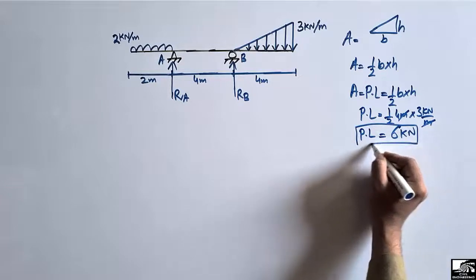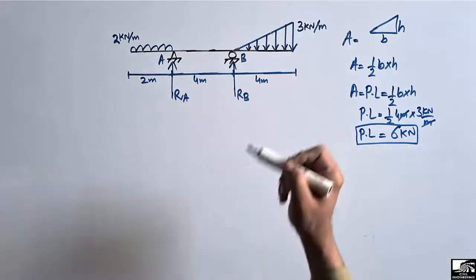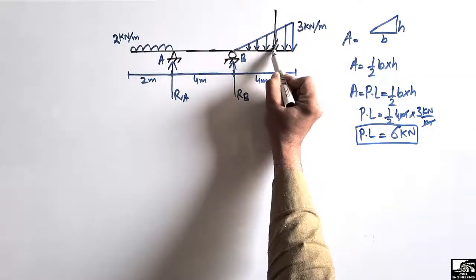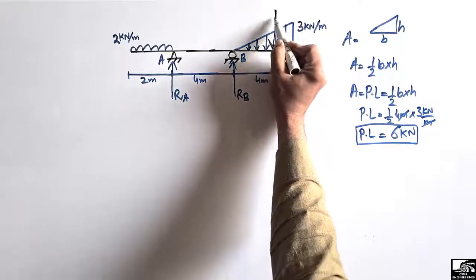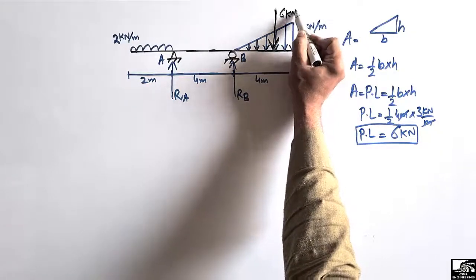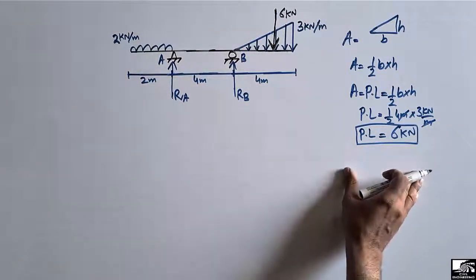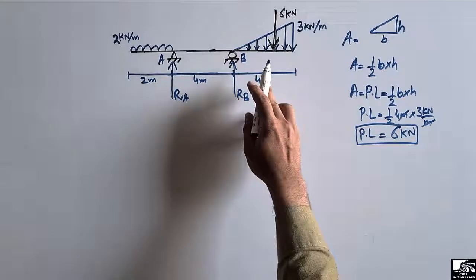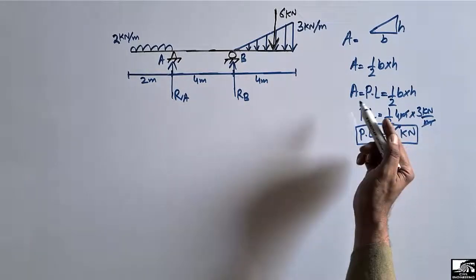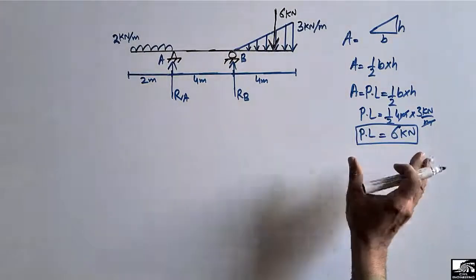This 6 kilonewton concentrated load acts at the centroid of the triangle. This was the first step: when we have a triangular load, we convert it into a pointed load using the area of the triangle formula.